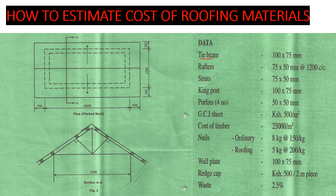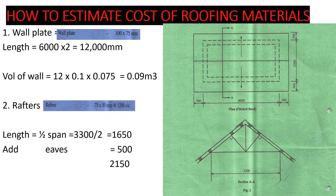Now let's proceed. Our first item is the wall plate. The wall plate runs along the length of both walls, so that is 6000mm multiplied by 2, giving us 12,000mm or 12 meters. Now let's find the volume. The size of the wall plate is 100 by 75mm, so the volume will be 12 meters × 0.1 × 0.075, giving us 0.09 cubic meters.